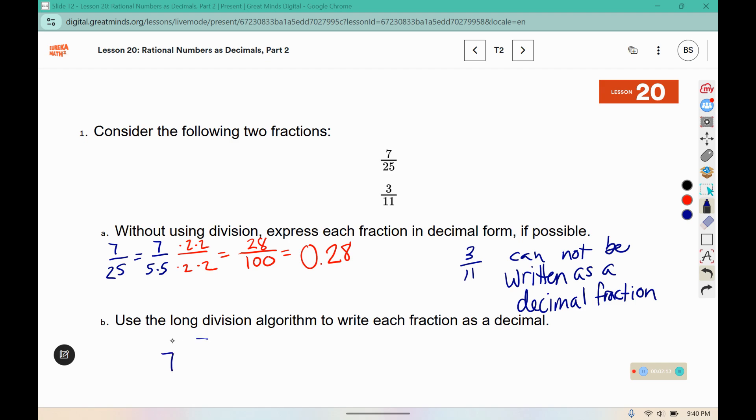We have 7 divided by 25. 25 doesn't fit into 7, but it does fit into 70. That would give us 50. So bring down the 0 and 25 fits into 200 8 times. 25, 50, 75, 100, 125, 150, 175, 200.